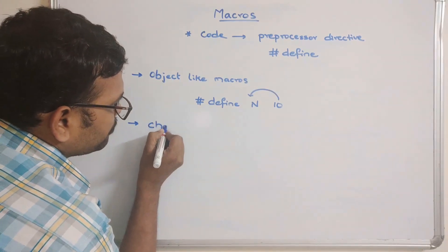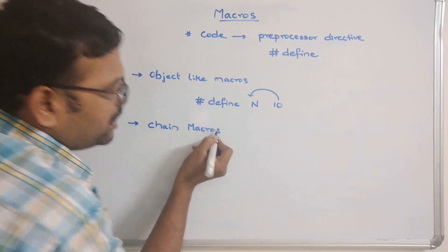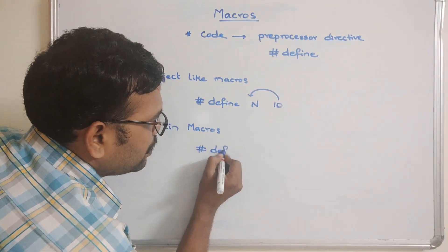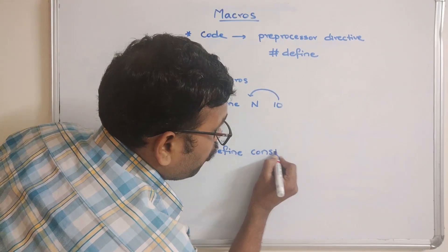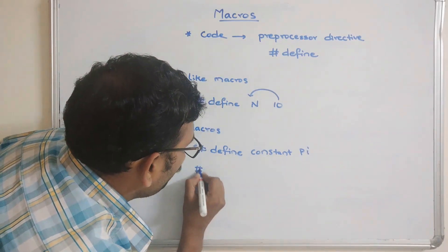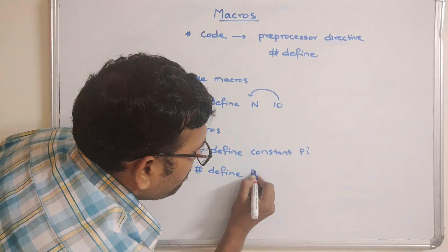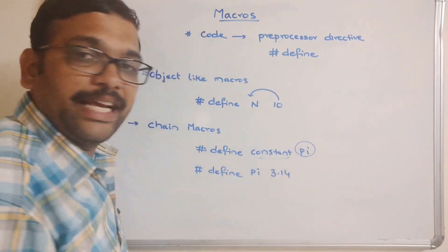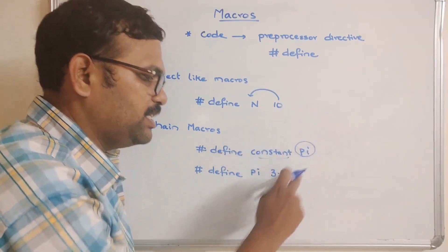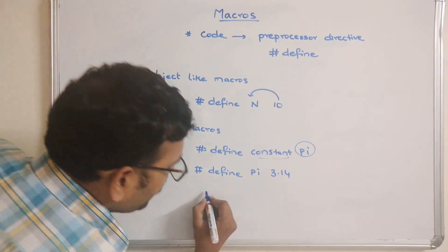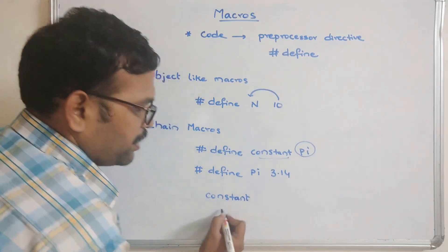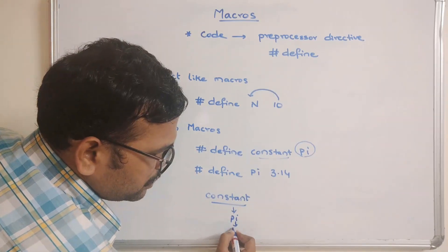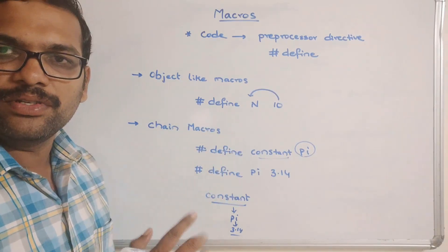The second category is chain macros. For example: #define constant pi, and then #define pi 3.14. If you use 'constant' in an expression, it will be substituted with 'pi', and 'pi' will be substituted with 3.14, so the final value is 3.14.